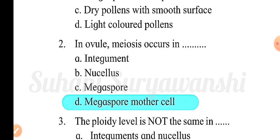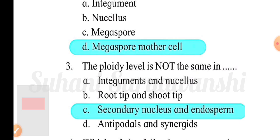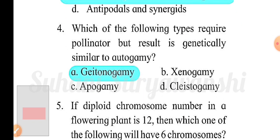Third question: the ploidy level is not the same in — option A: integuments and nucellus; option B: root tip and shoot tip; option C: secondary nucleus and endosperm; option D: antipodals and synergids. The correct answer is option C, secondary nucleus and endosperm.